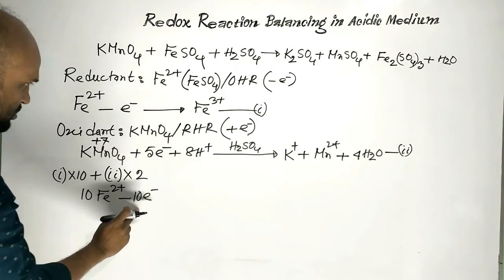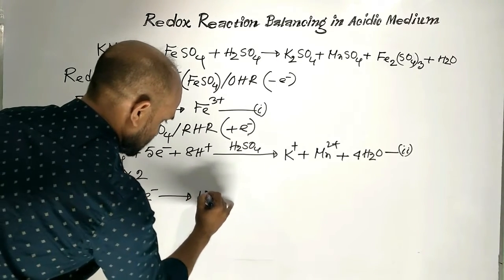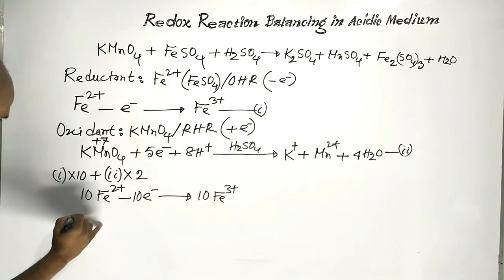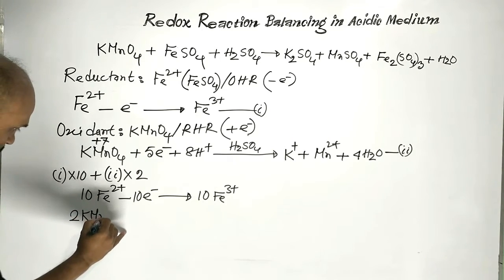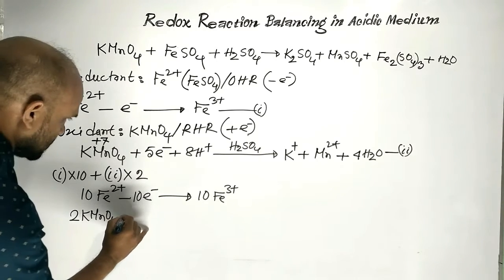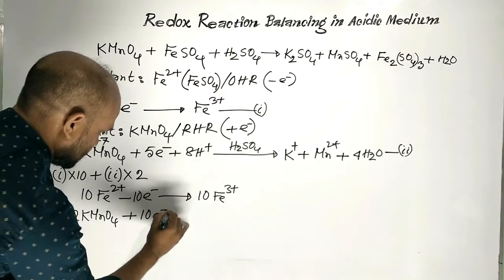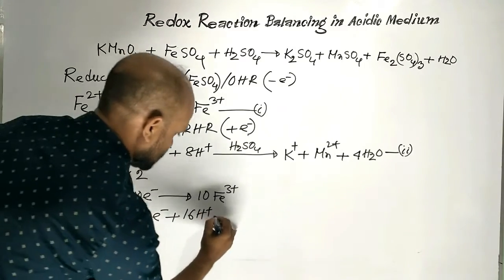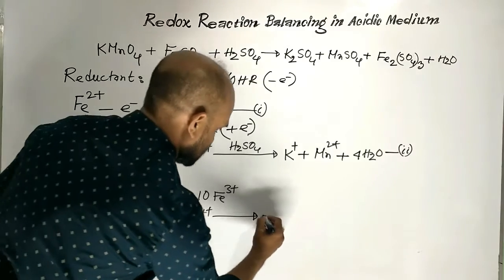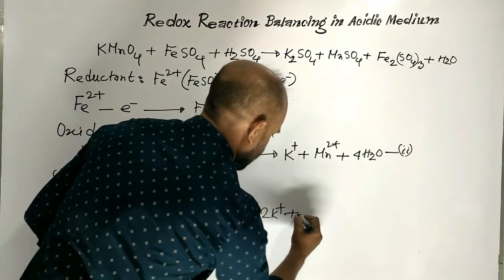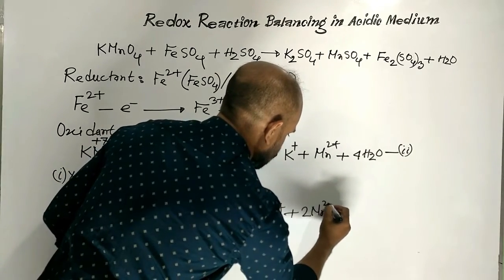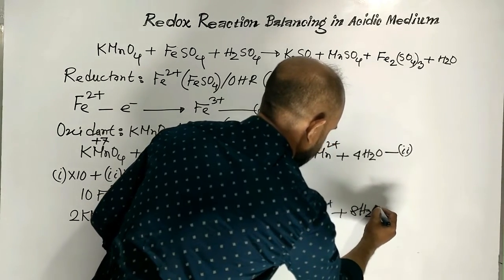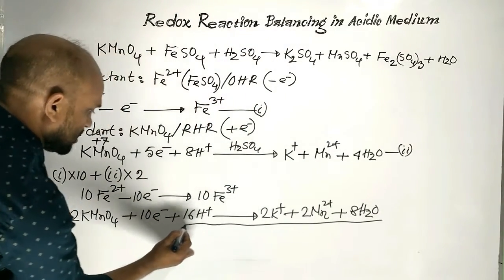On the right side, 10 Ferric Ions. From equation 2: 2 Potassium permanganate plus 10 electrons plus 16 protons; on the right side, 2 Potassium ions, 2 Manganese 2+ ions, plus 8 molecules of water. Now these two equations are added.